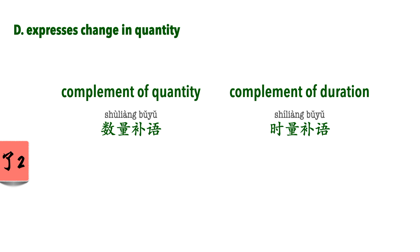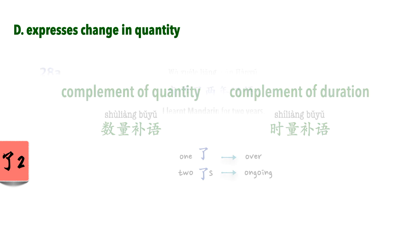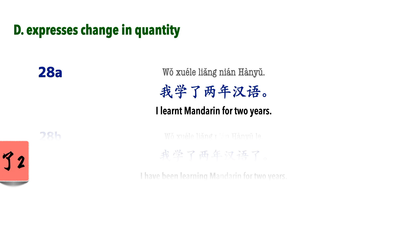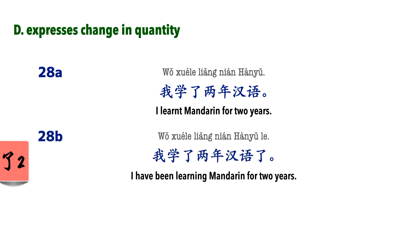If you've learnt the complements of quantity and duration, you might have learnt that when you have a single 了, it means that the action is over. And when you have two of them, it means that the action is ongoing. 我学了两年汉语. 我学了两年汉语了. These two examples are commonly found in textbooks to indicate the difference between having one 了 and two 了s. In A, the action of learning is complete, whereas in B, I'm still learning and intend to continue.